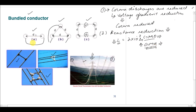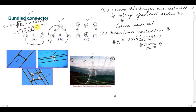For the example of a two-conductor bundle, the GMR is calculated as: GMR = (Ds × D × Ds × D)^(1/4), where Ds is the self-GMR of one conductor and D is the distance to the second conductor. This is Ds² × D², raised to the power of 1/N², where N is the number of conductors in the bundle — here N=2, so power is 1/4. Solving this gives GMR = √(Ds × D).